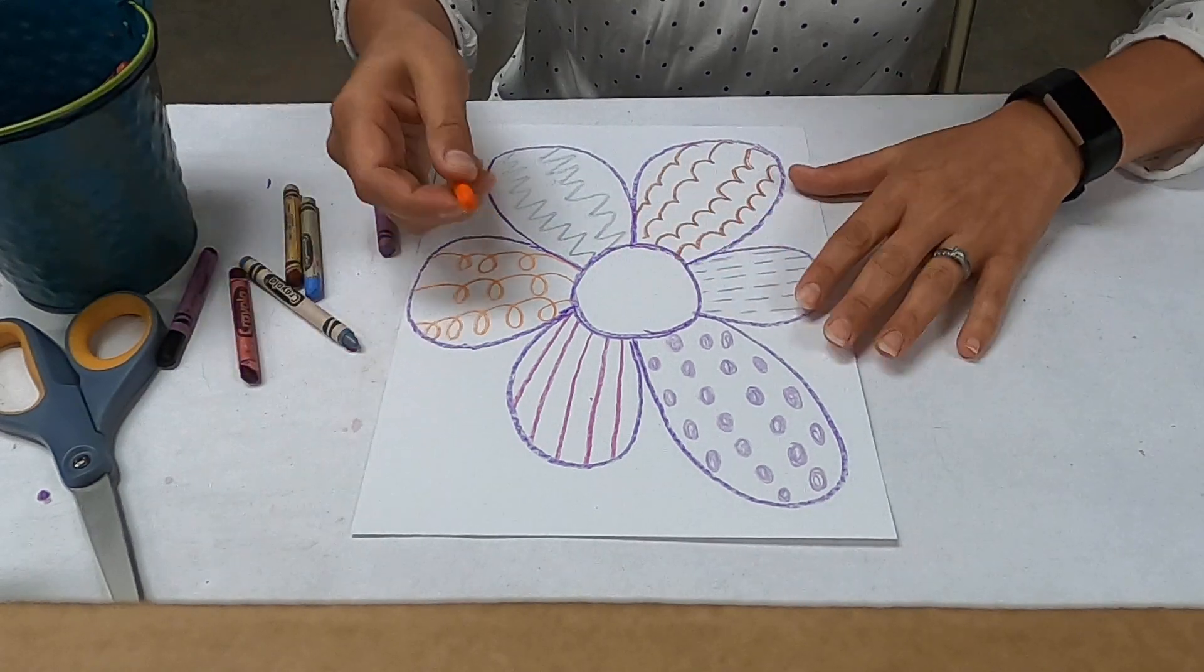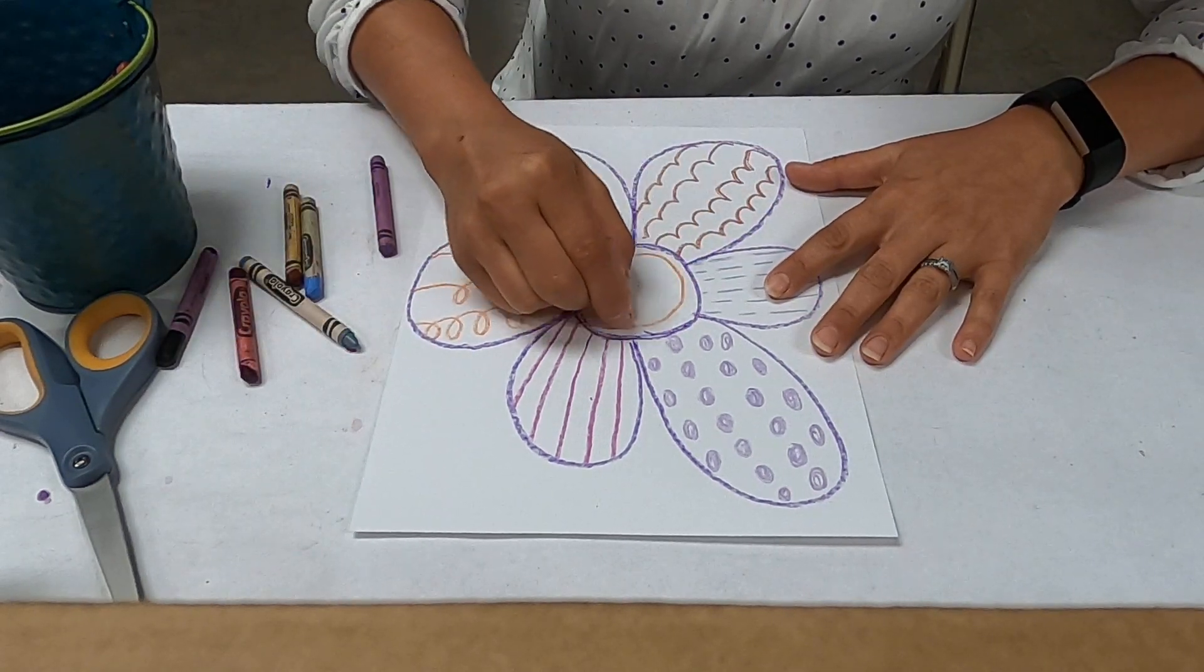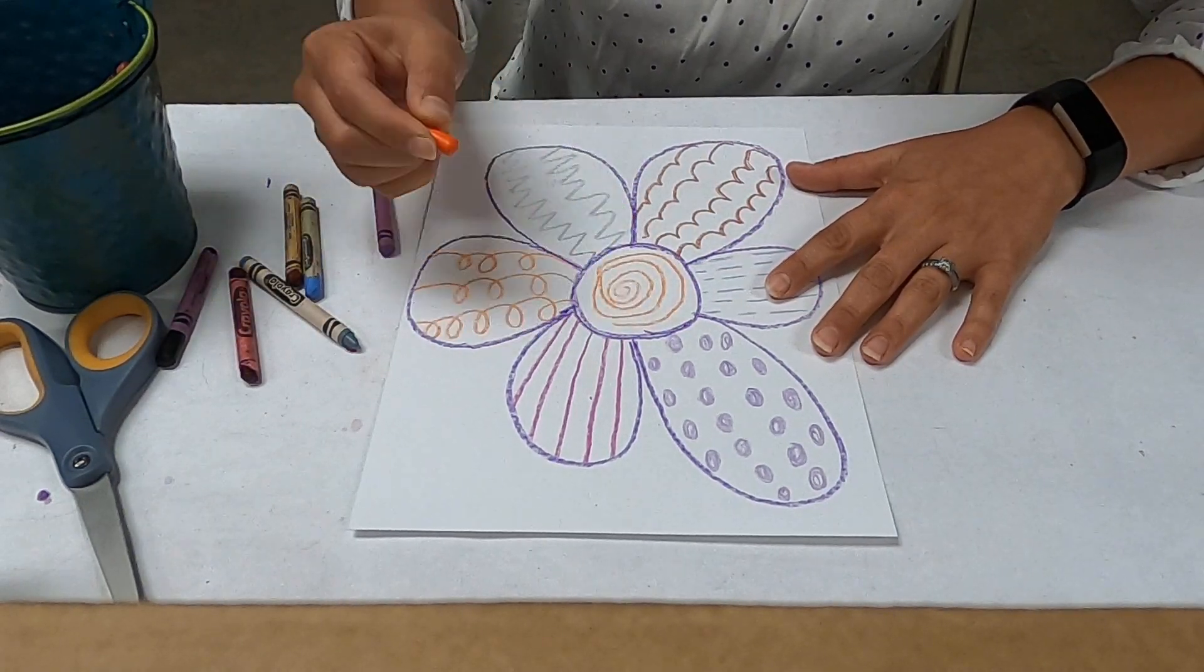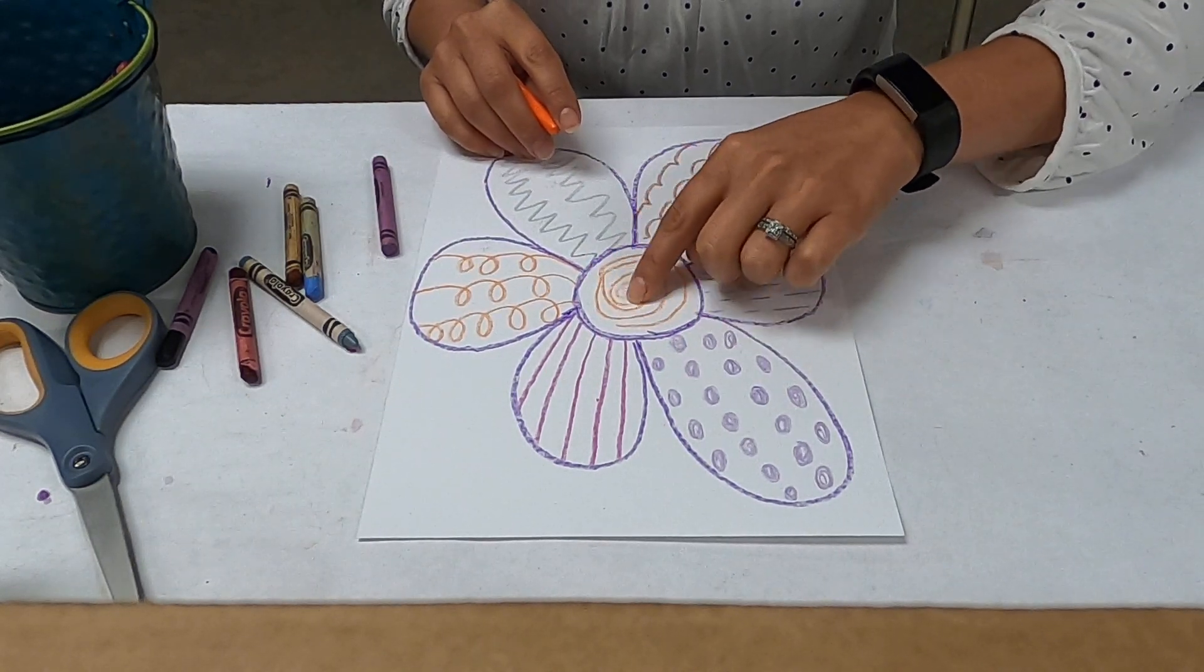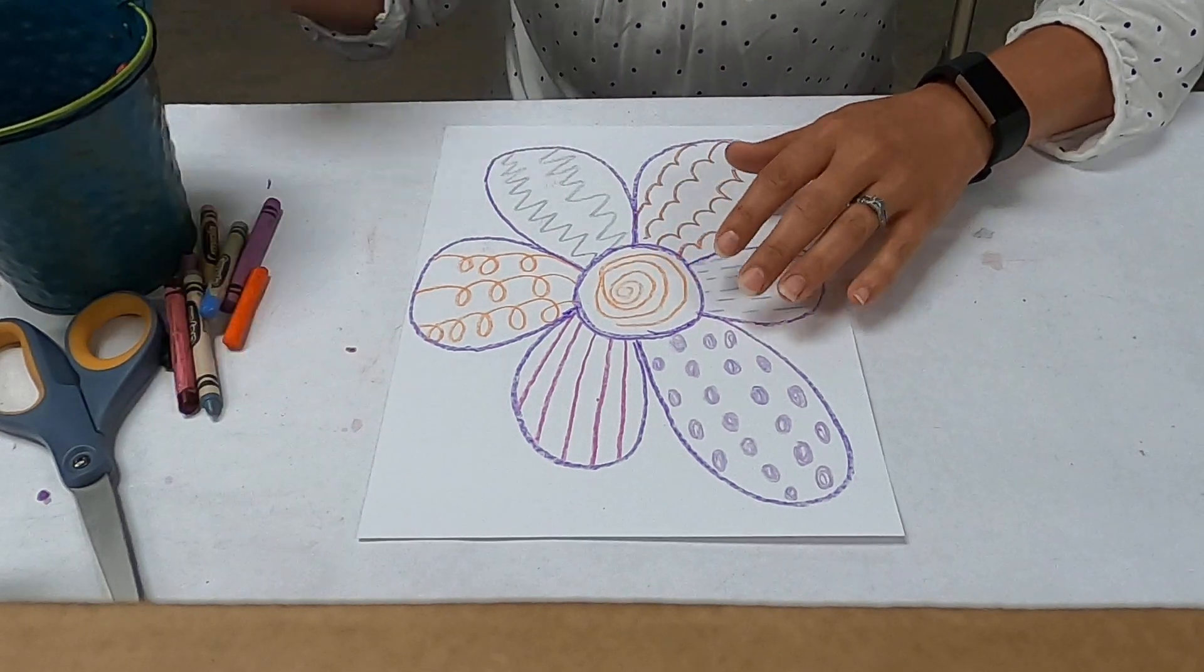And then you can do anything you want to in the middle. So I'm going to do a big, it almost looks like a snail, a spiral. That's a type of line too, a spiral, all the way down.